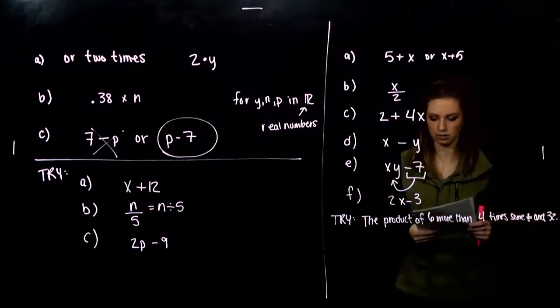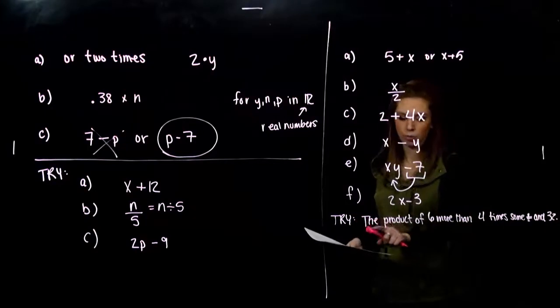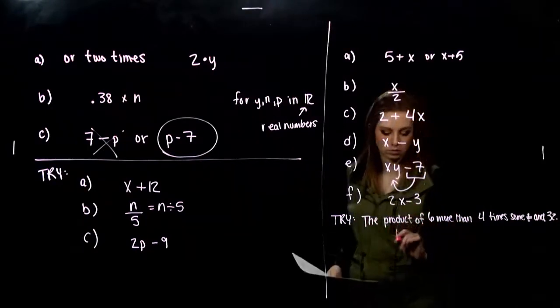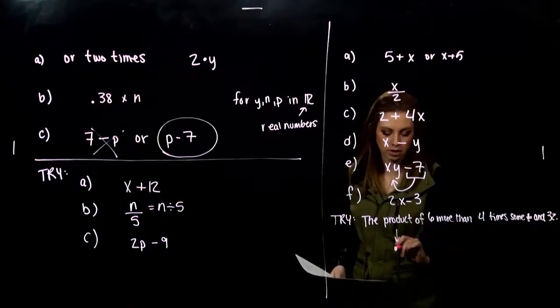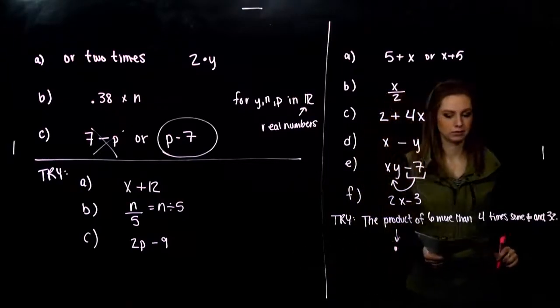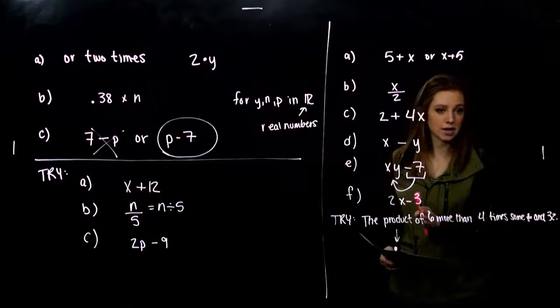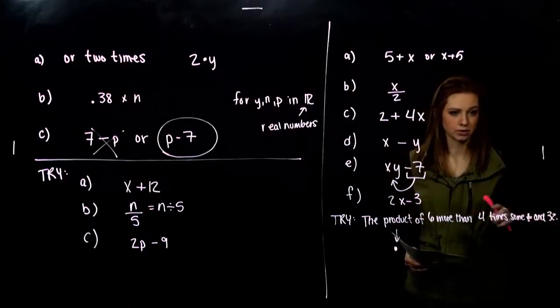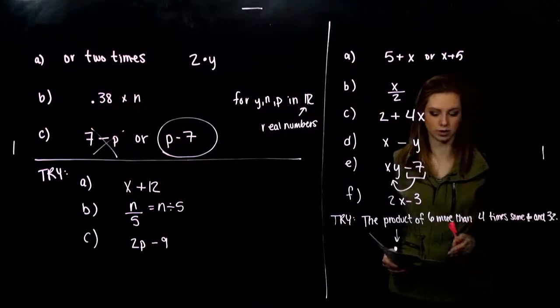And see what each of them mean. So I'm talking about the product of. So product indicates what? Multiplication. Okay. So I should between the end of this sentence have two quantities that I'm going to be multiplying together. So what is kind of our dividing word in this sentence?